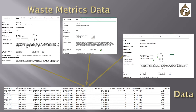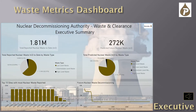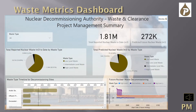We fed this into Power BI so the reports could easily be compared and summarized. We created a dashboard which is an executive summary of the waste and clearance data, showing a high-level view of the amount of nuclear waste reported to date as well as future deposits. Two pie charts show the proportion per waste type, a bottom-left bar chart shows the top 15 sites with the most nuclear waste, and the bottom-right chart shows future nuclear waste levels for the next 100 years.